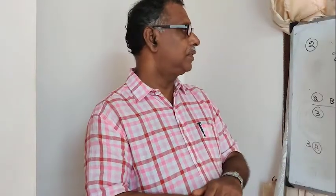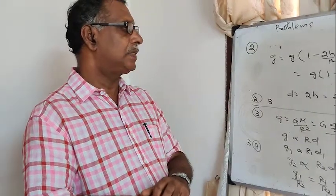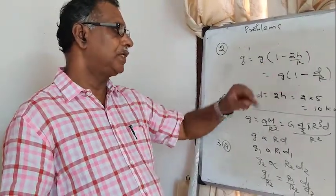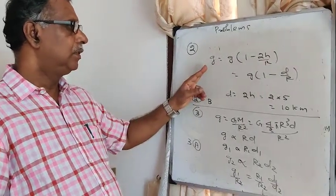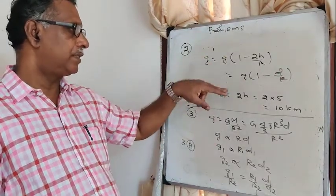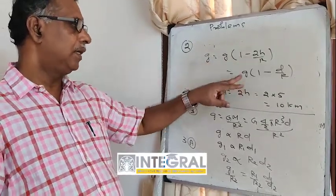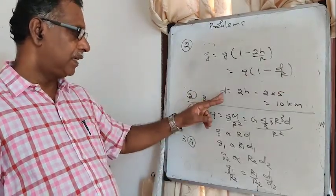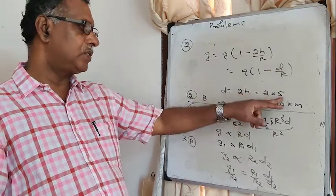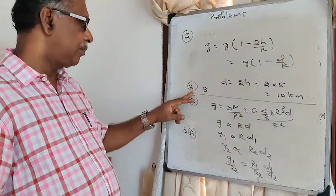Question 2: At height H, g' = g·(1 − 2H/R); at depth D, g' = g·(1 − D/R). Setting these equal: 1 − 2H/R = 1 − D/R, giving D = 2H. With H = 5 km, D = 10 km. The answer is B.